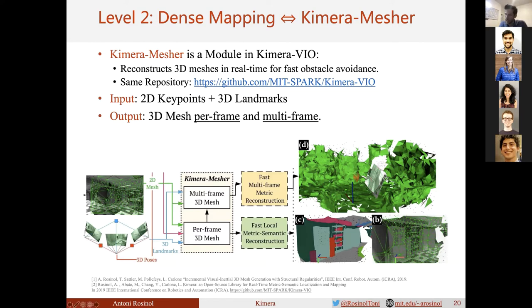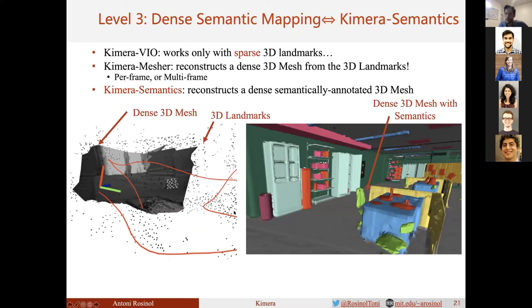Then it builds a Delaunay triangulation over the 2D keypoints, resulting in a 2D mesh, and projects this 2D mesh into 3D, creating a per-frame 3D mesh. This is possible because each 2D keypoint has an associated 3D landmark from Kimera-VIO. We then accumulate the per-frame meshes into a multi-frame 3D mesh over the time horizon of the sliding window optimization in the VIO.